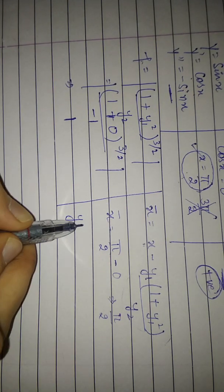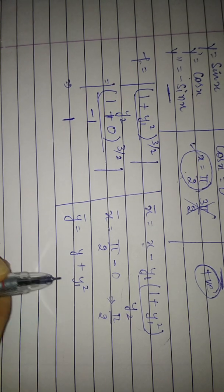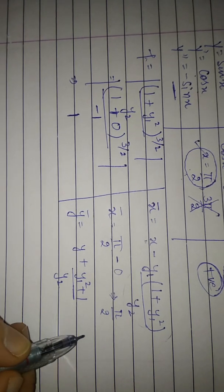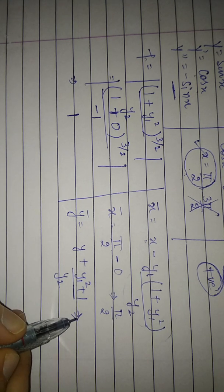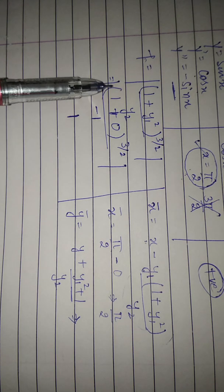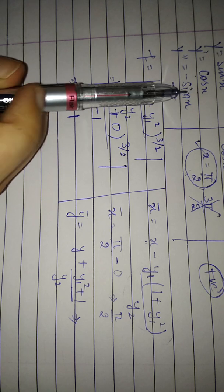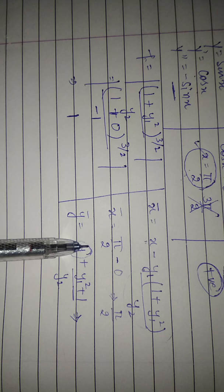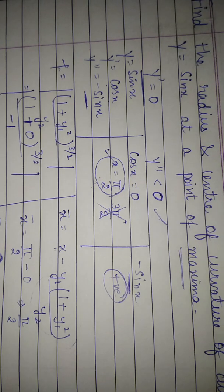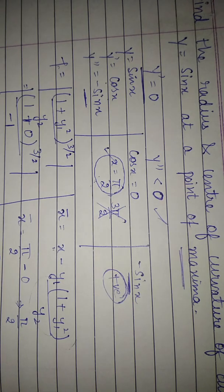And for y coordinate, we have the formula y plus (y₁² upon y₂) plus 1. So we will put the values here. We have y₁ will again be 0, because y₁ is cos x and cos x at π by 2 is 0. But the value of this y, how will we get the value of this y? We will put x equals to π by 2 in the given curve y equals sin x. So y equals sin π by 2, as we all know, is 1.